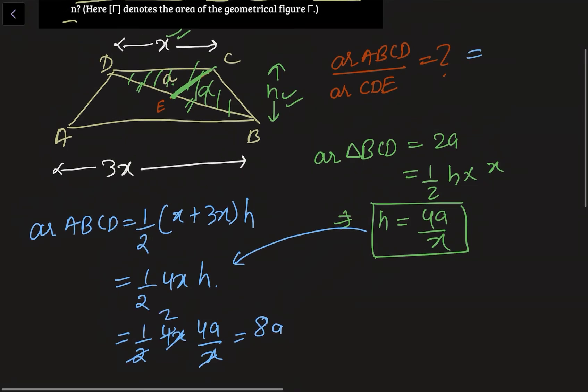Now this ABCD area is 8A and this CDE area is A. So this A got cancelled. We are getting 8 as our final answer.